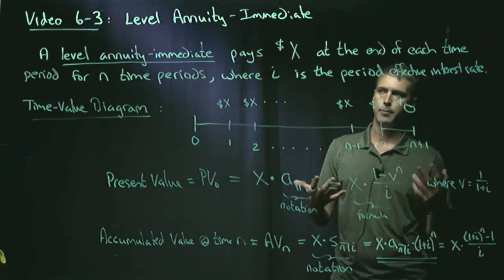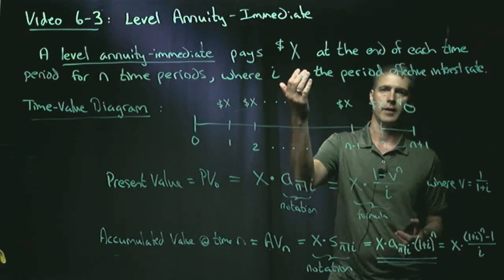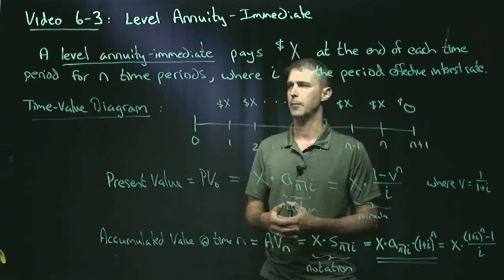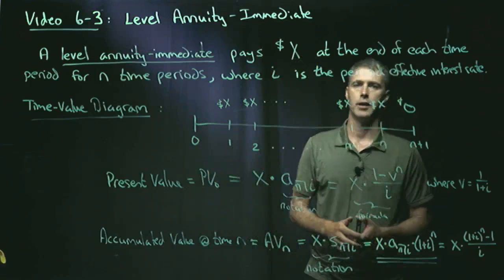So the period might be a month, in which case you need the effective monthly interest rate, and quarterly you need a quarterly effective interest rate. So here's the time value diagram.